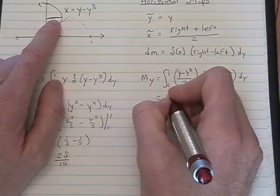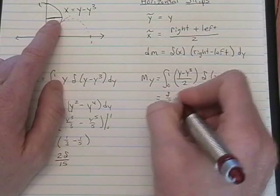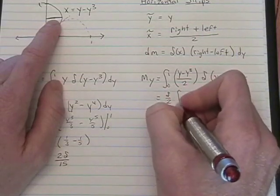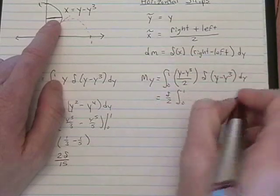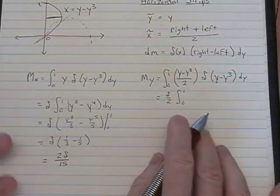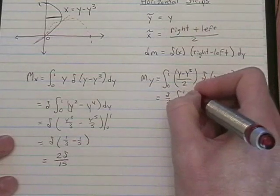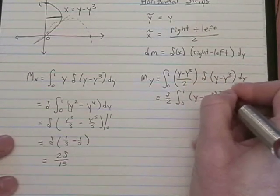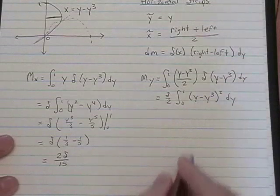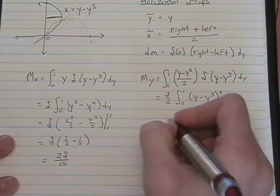In this case, I'm going to factor out delta over 2. Those are constants. And then I just have y minus y cubed squared. Go ahead and foil that bad boy.